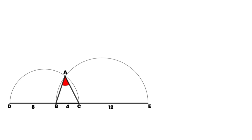Two semicircles intersect as shown in the diagram. We know that DB is equal to 8 units, BC is equal to 4, and DC is equal to 12. So what is angle BAC?